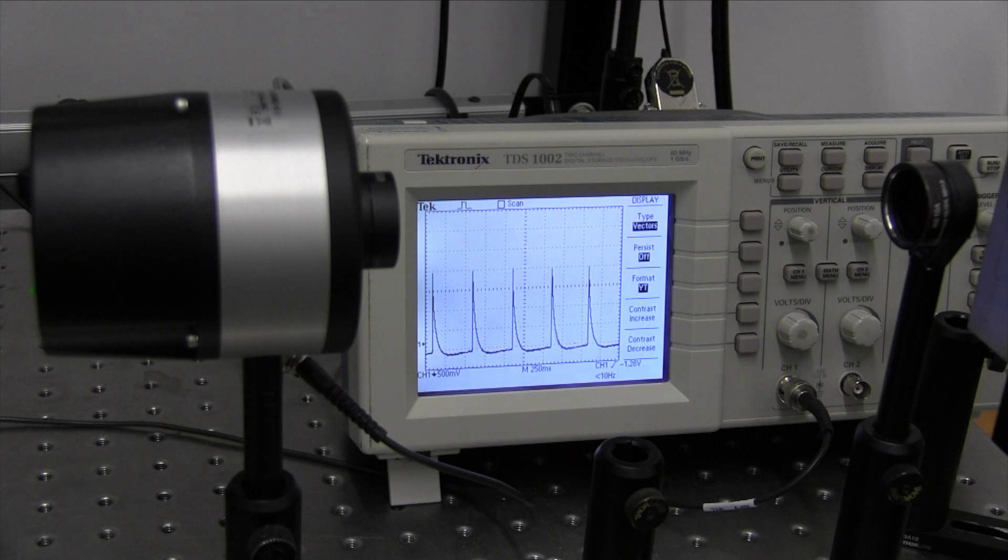You can see the integrated voltage output from the detector. It has a fast rise time and a slower fall time determined by the RC time constant of the circuit.